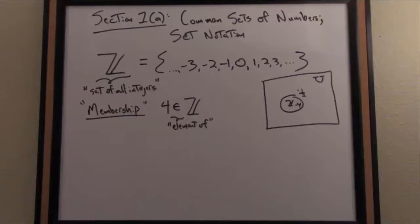But one half is not in there. That's how we denote membership in a set. Four is an element of, we use the epsilon symbol. I could similarly write zero is an element of the integers, or eight is an element of the integers.